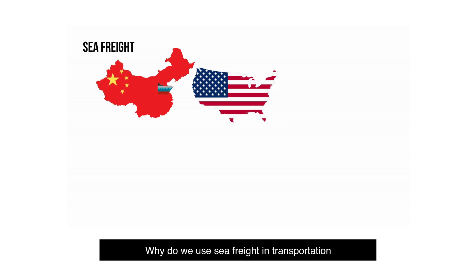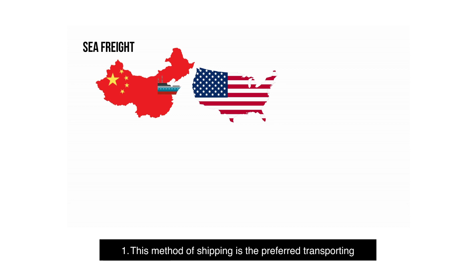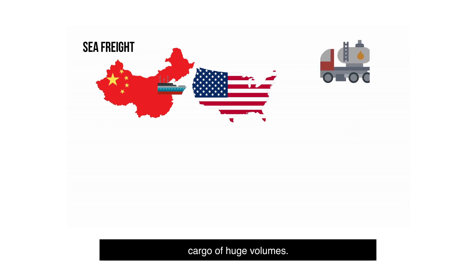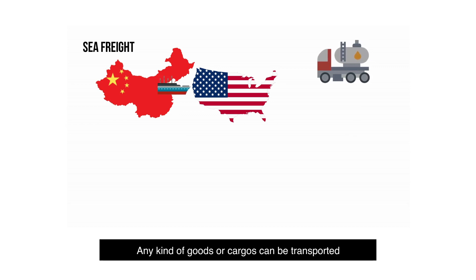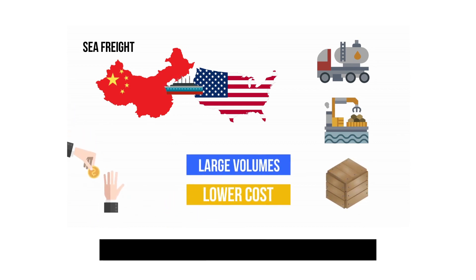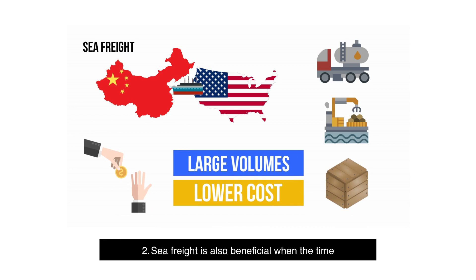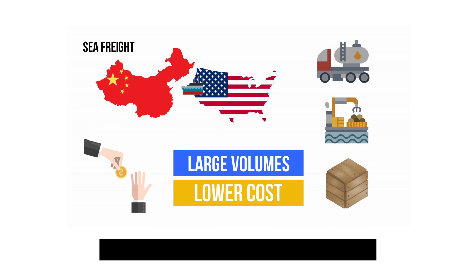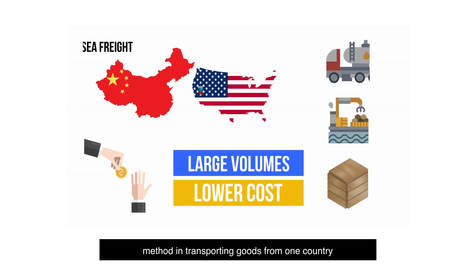Why do we use sea freight for transportation and shipping from China to the U.S.? One, this method of shipping is the preferred way for transporting cargo of huge volumes. Any kind of goods or cargoes can be transported via sea freight — for example, heavy equipment like trucks, cranes, and project cargo. Two, sea freight is also beneficial when time is not a factor, which is typical for large volumes of shipment. Paying lower costs at high volumes of shipping is one of the main reasons why people choose this method.